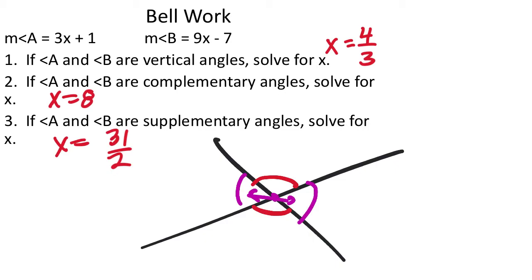And again, just like I said before, if there's a line coming out right there, you'd still say the full red angle and this full red angle, they're still vertical. The unique thing about vertical angles is that they're equal, which is why in this example you'd say 3x plus 1 equals 9x minus 7, which allows you to solve for that x value.